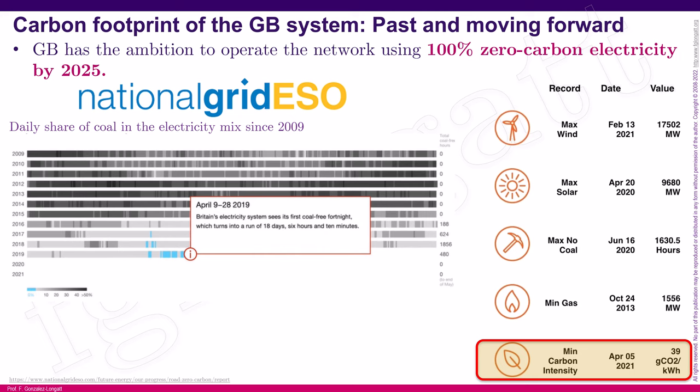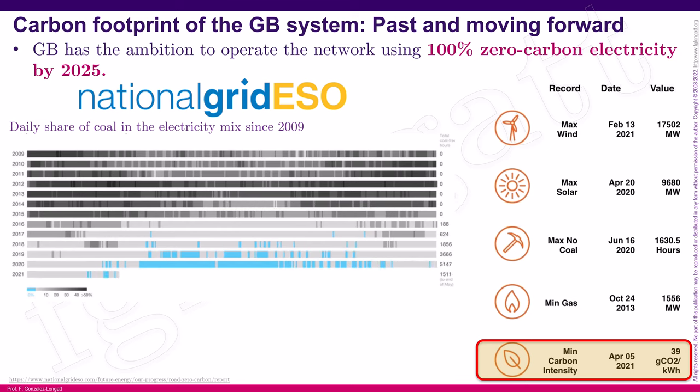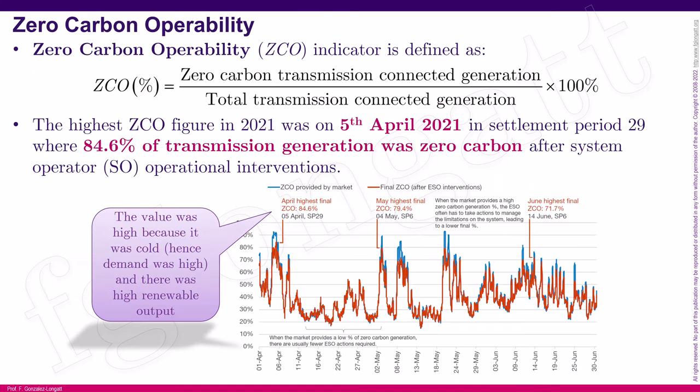We can see how we started having reductions on coal power plants and increasing penetration of solar and wind power, including a huge penetration of wind power from the North Sea. In 2013, carbon intensity was 520 grams of CO2 per kilowatt-hour. By 2016, that was reduced to 330 grams, and by 2020, an impressive reduction of 65.8% brought it to 181 grams of CO2 per kilowatt-hour.